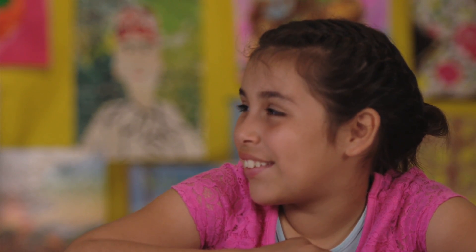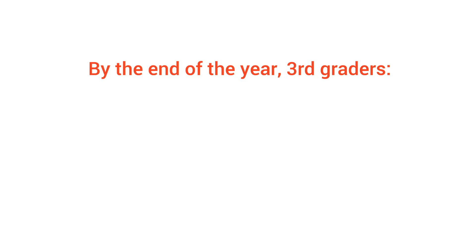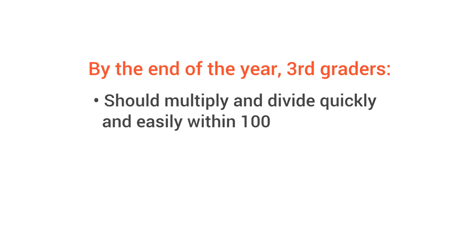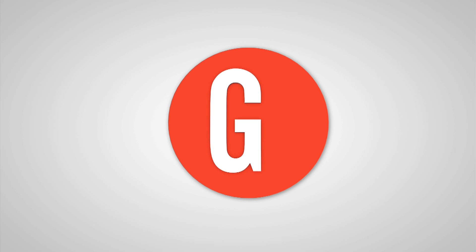So how do you know your child's on track? By the end of the year, third graders should multiply and divide quickly and easily within 100.